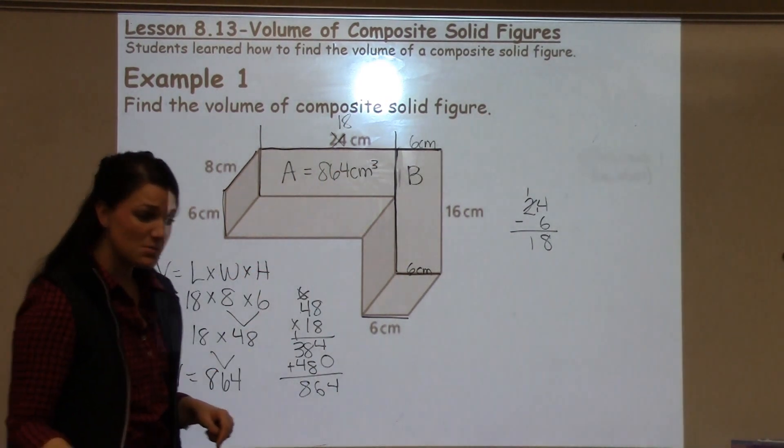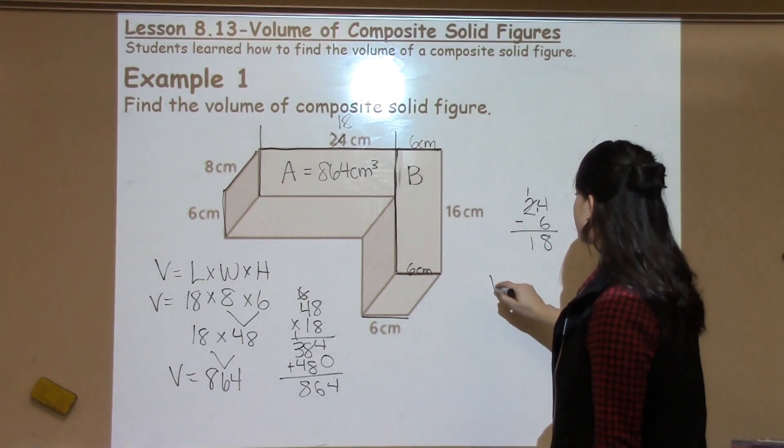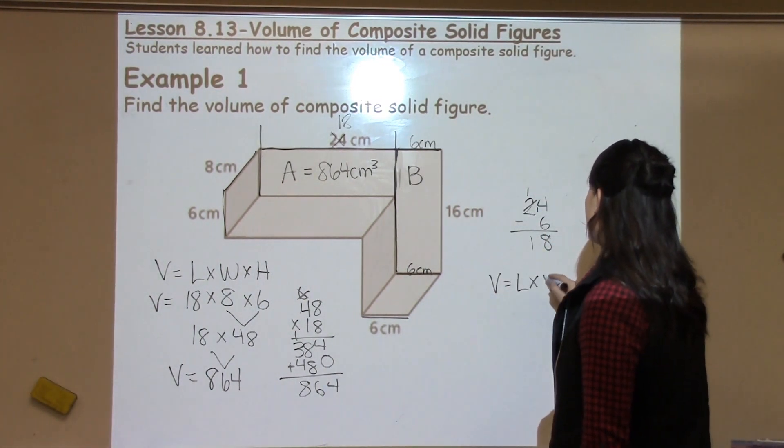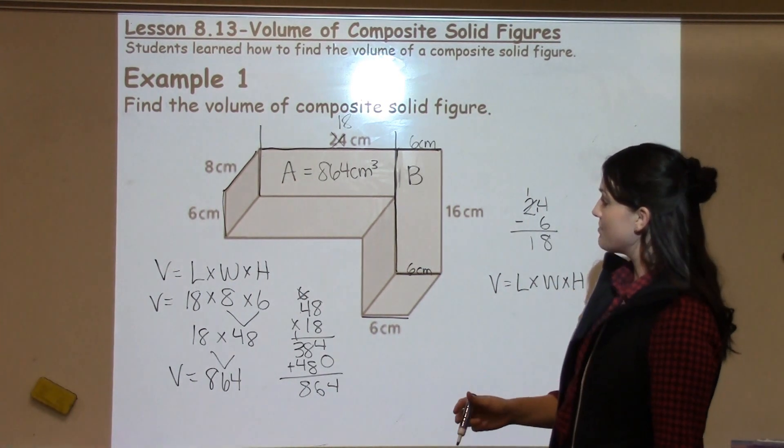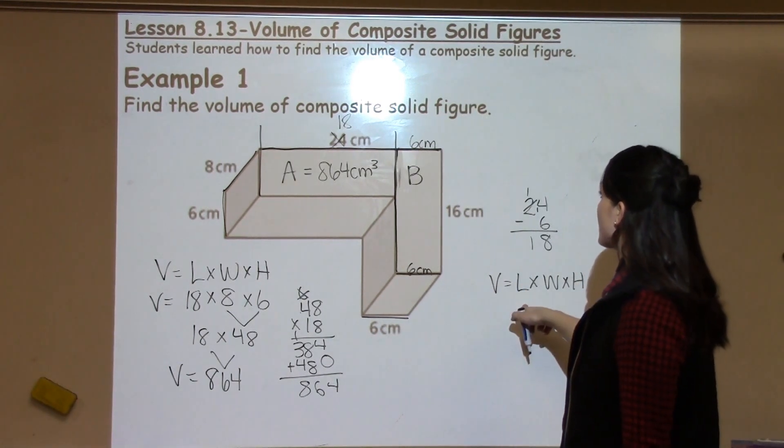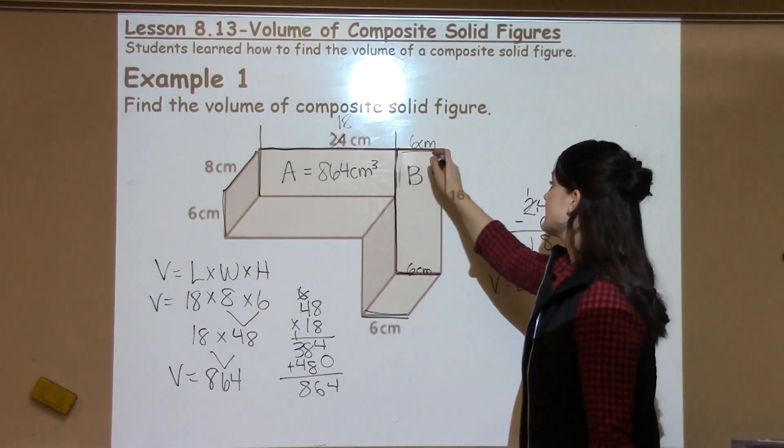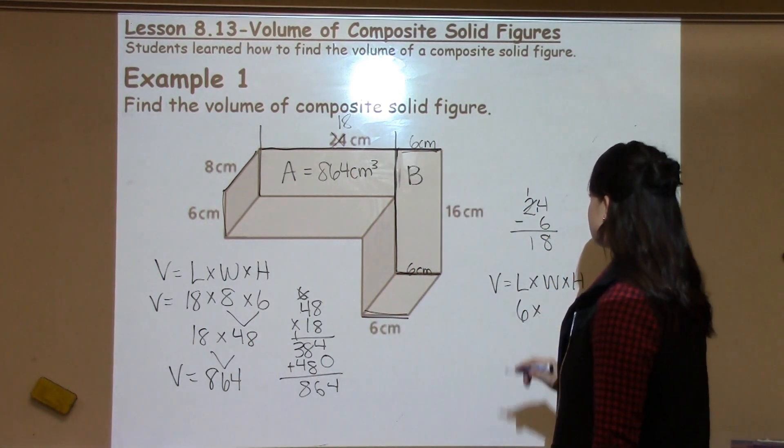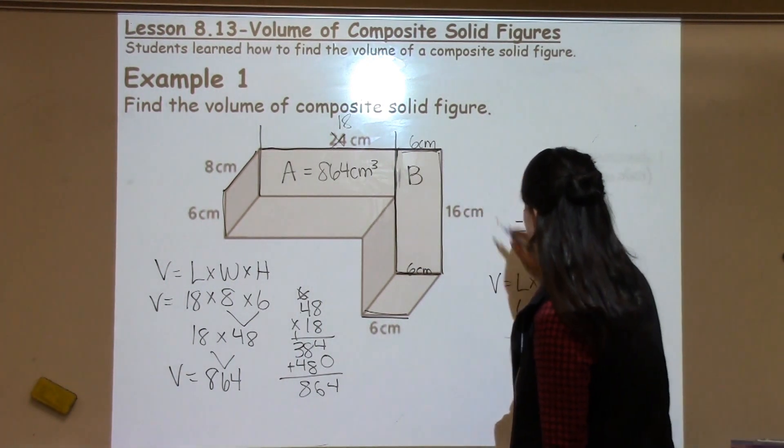I'm not done with the problem. I've done a lot of work, but I'm not quite finished because now I need to find the volume for shape B. I know that volume is length times width times height. Then I need to look at shape B and decide what do I already know? I have the length of the shape, which would be six. I have the height of the shape, which is right here with 16.